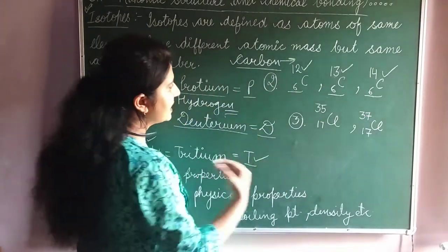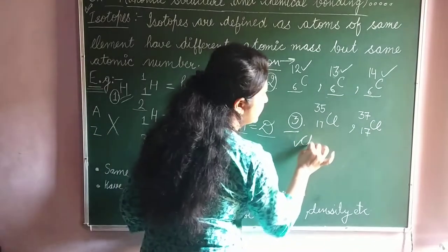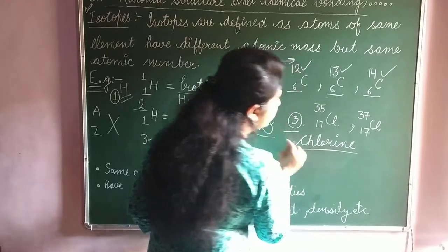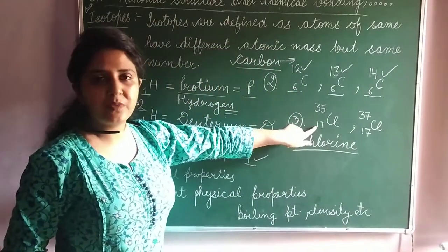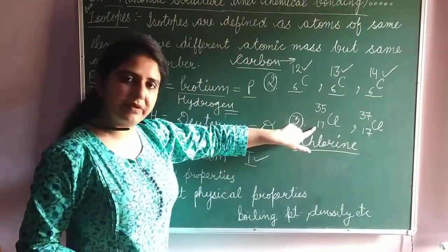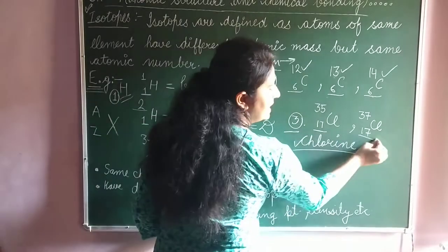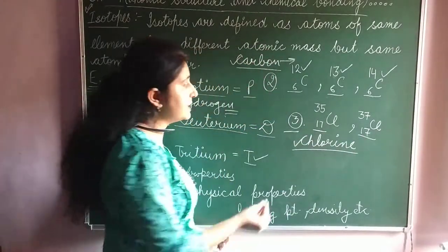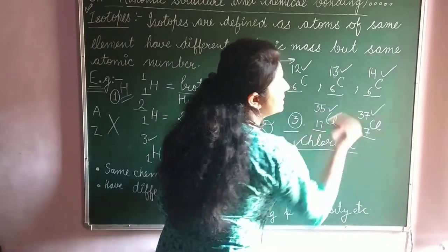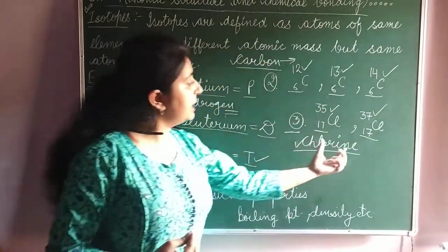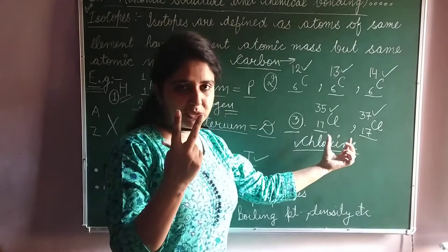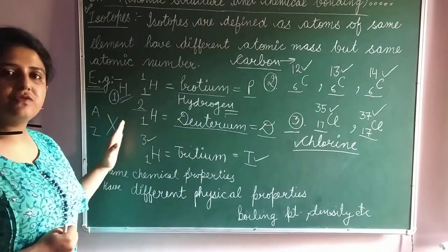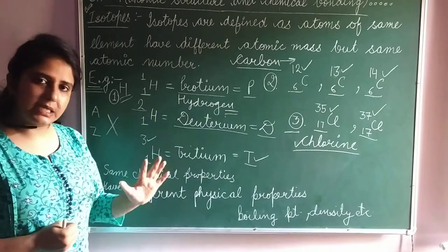The next example is of the chlorine atom. The atomic number of chlorine is 17, so both isotopes have atomic number 17 and 17. The atomic masses of chlorine are 35 and 37. So chlorine shows two isotopes, carbon shows three isotopes, and hydrogen shows three isotopes.